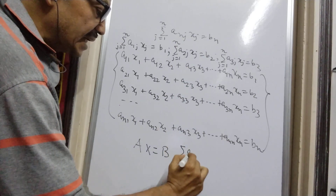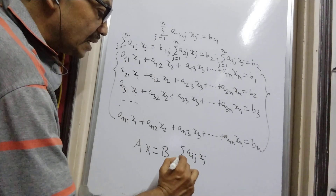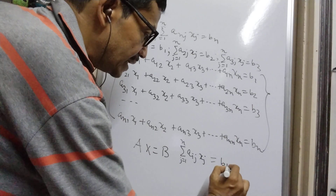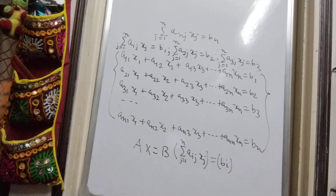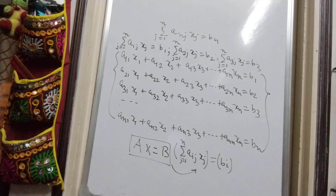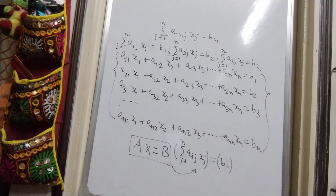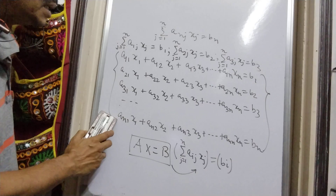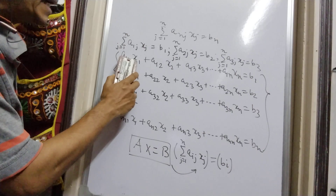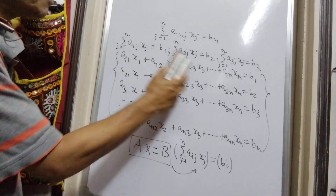We may represent it as aij*xj, where the repeated index j is summed, equal to Bi — these are column matrices. With this formalism, we rewrite each equation by isolating xi. From the first equation, x1 = B1/a11 - (a12/a11)*x2 - (a13/a11)*x3 - ... - (a1n/a11)*xn.